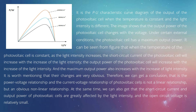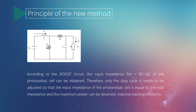The open circuit voltage is relatively less sensitive. According to the equivalent circuit, only the duty cycle needs to be adjusted so that the input impedance of the photovoltaic cell matches the load impedance, and the maximum power can be obtained. This improves tracking efficiency.